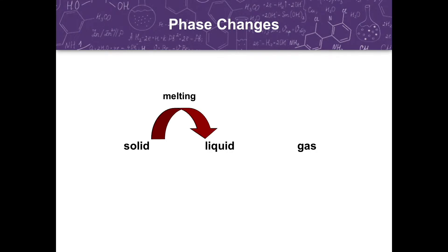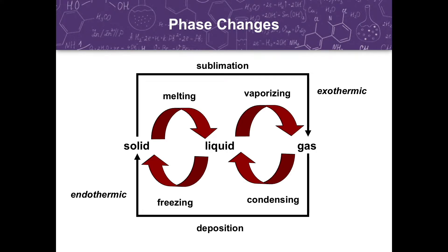Now, for the phase changes each state of matter undergoes: when solid is converted to liquid, we call it melting. Liquid to gas is vaporizing. Gas to liquid is condensing. Liquid to solid is freezing. Solid to gas is sublimation, and gas to solid is deposition.